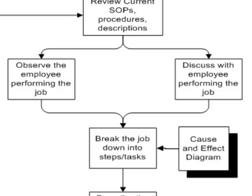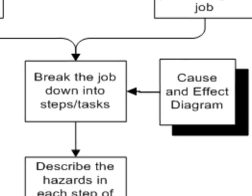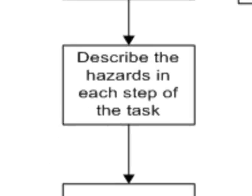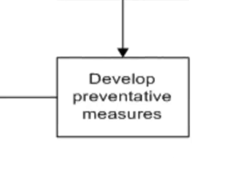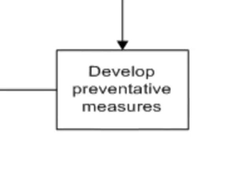We use the cause and effect diagram to pull this information together and break the job down into the various steps and tasks. Once we've got the job defined, we can then begin the process of identifying the hazards that exist within each step of the job and the various subtasks that might be having to be completed. From this analysis, we can develop preventive measures.